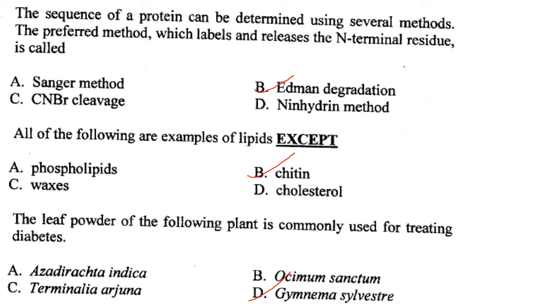All of the following are examples of lipids except chitin. Chitin is not a lipid. Answer is option B.